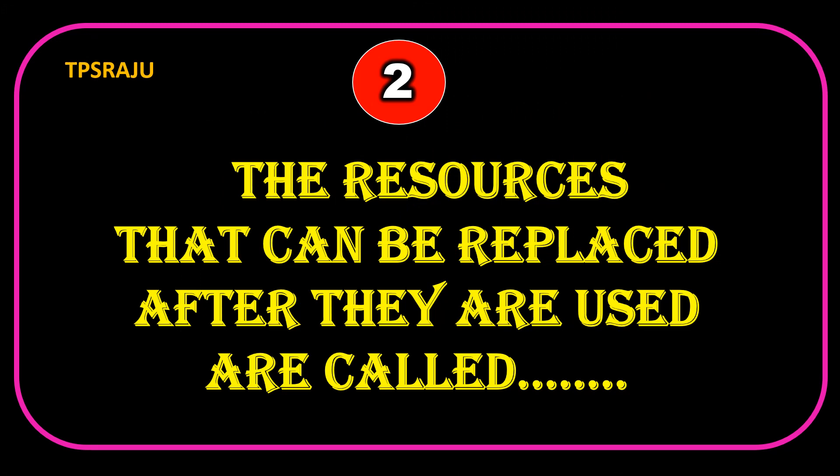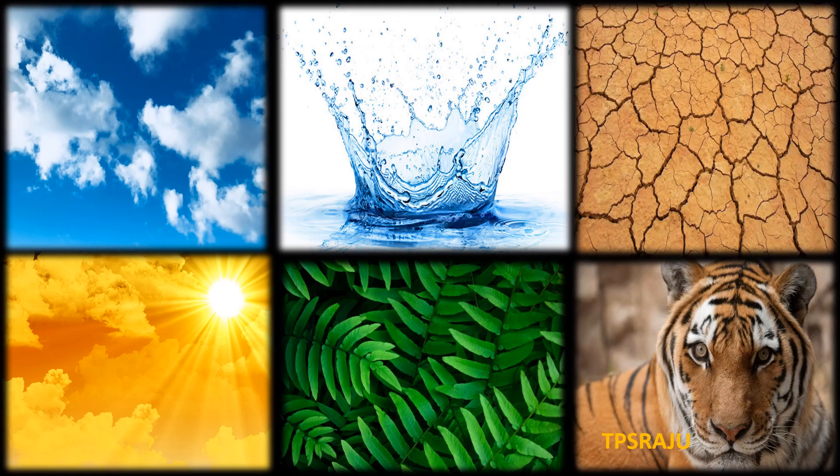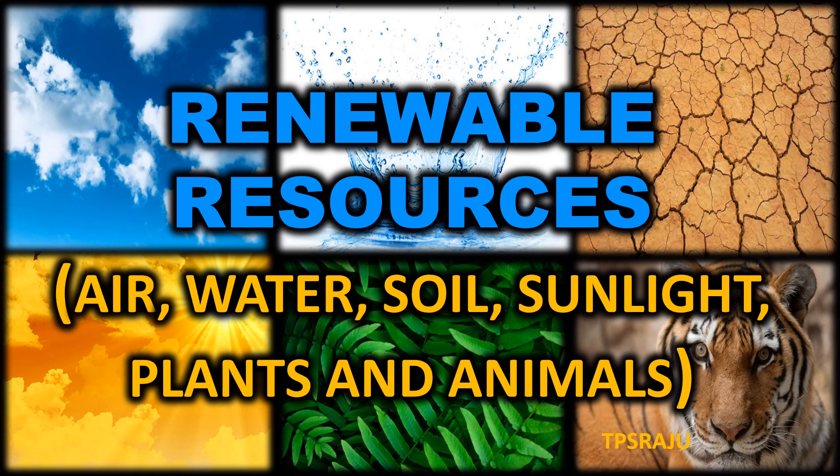The resources that can be replaced after they are used are called renewable resources, such as air, water, soil, sunlight, plants and animals.